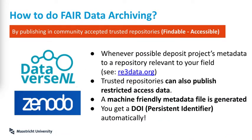So how do we do FAIR data archiving? By publishing in community-accepted, trusted repositories like Dataverse or Zenodo — and there are many more, hundreds of them. For sure, there are repositories that fit your research. You can take a look at re3data to find different repositories. You can also publish restricted access data if you see fit. Plus, a machine-friendly metadata file is generated and you get a DOI or persistent identifier for your dataset automatically.